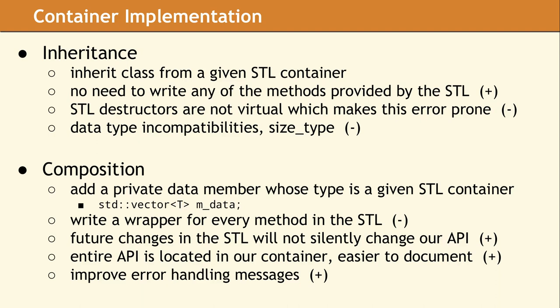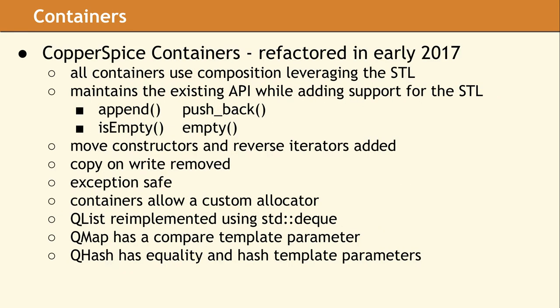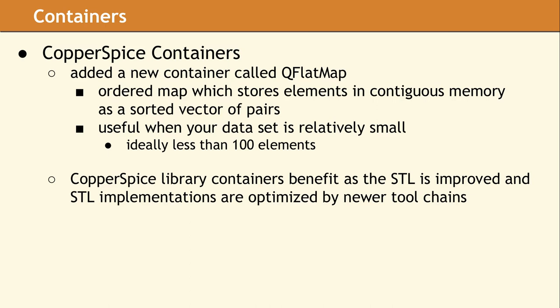Using composition also gave us the benefit that the entire API is located in our container class, which makes it easier to document and understand. The Copper Spice containers were fully refactored from legacy custom code to wrappers for the STL containers. Since we added support for the STL API, you can now use all of the STL algorithms with the Copper Spice containers. We also took the opportunity to add a new container called QFlatMap — an ordered map which stores elements in contiguous memory as a sorted vector of pairs, useful when you want to look up by key and your dataset is relatively small. Since the Copper Spice library containers are implemented using the STL, they benefit as the STL is improved and as STL implementations are optimized by newer toolchains.